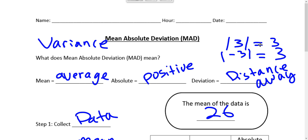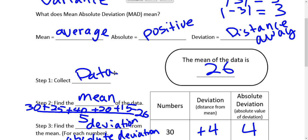Absolute means positive, like absolute value. So absolute value of 3 is 3. Absolute value of negative 3 is 3. So it's technically, how far is it away from 0? So it's a positive value, deviation is the distance away. So the first step is collect your data.